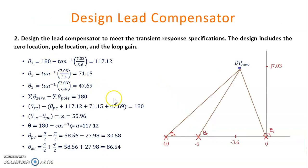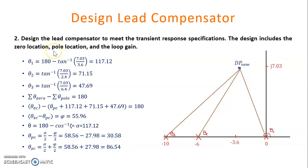The next step is to design the lead compensator to meet the transient response specifications. The design includes the zero location, pole location, and the loop gain. Based on the new dominant pole location, we translate into a pole and zero map, including the real poles at 0, minus 6, and minus 10 from the original uncompensated transfer function. We then determine theta_1, theta_2, theta_3, and also include the zero and pole locations. Using the formula — the summation of zeros minus the summation of poles equals 180 degrees.